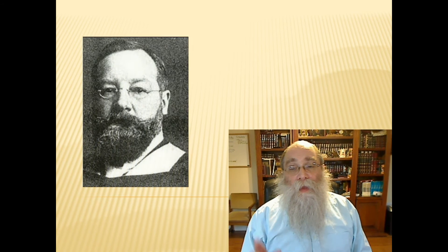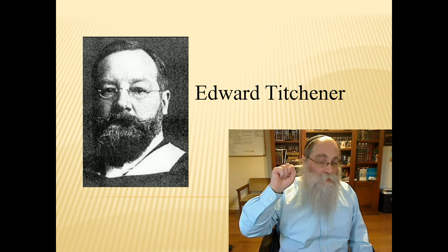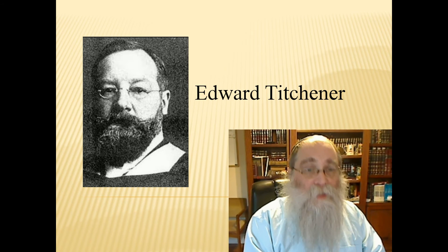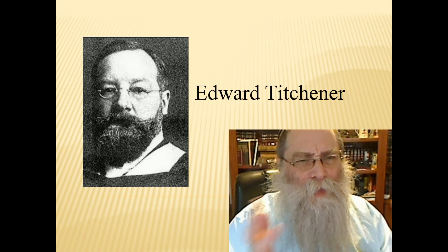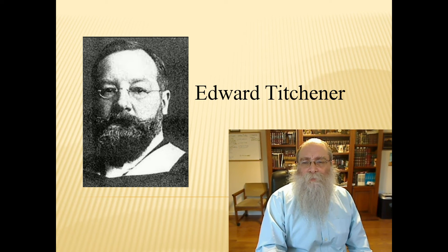Now, he had a student, a fellow who came from England to Leipzig, Germany, learned under Wundt, and that man, whose name was Edward Titchener, he was a student of Wundt in Leipzig. And when he graduated there, he took his studies, he took his practice, and he went to Cornell University in the United States. And he brought that scientific psychology to the United States and Cornell University. And he was probably the most famous of the structuralists. And he categorized thousands or tens of thousands of different sensations.